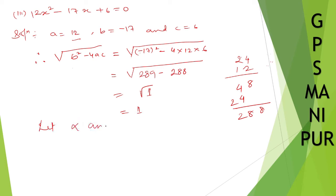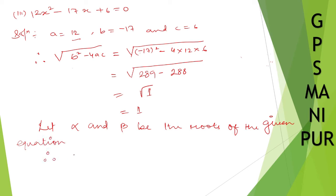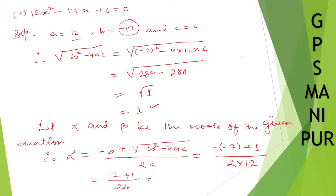Let α and β be the roots of the given equation. So therefore, α will be equal to (-b + √(b² - 4ac))/2a. Which will be equal to... minus b, what is -b here? So -(-17) + (b² - 4ac) it is 1. So +1 divided by 2a that is 2 into 12.